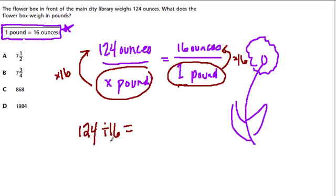That's kind of what I'm solving here. Because 16 times some mystery number will give us 124. And that of course will tell us the pounds. So we're trying to find that number times 16 that gives us 124.